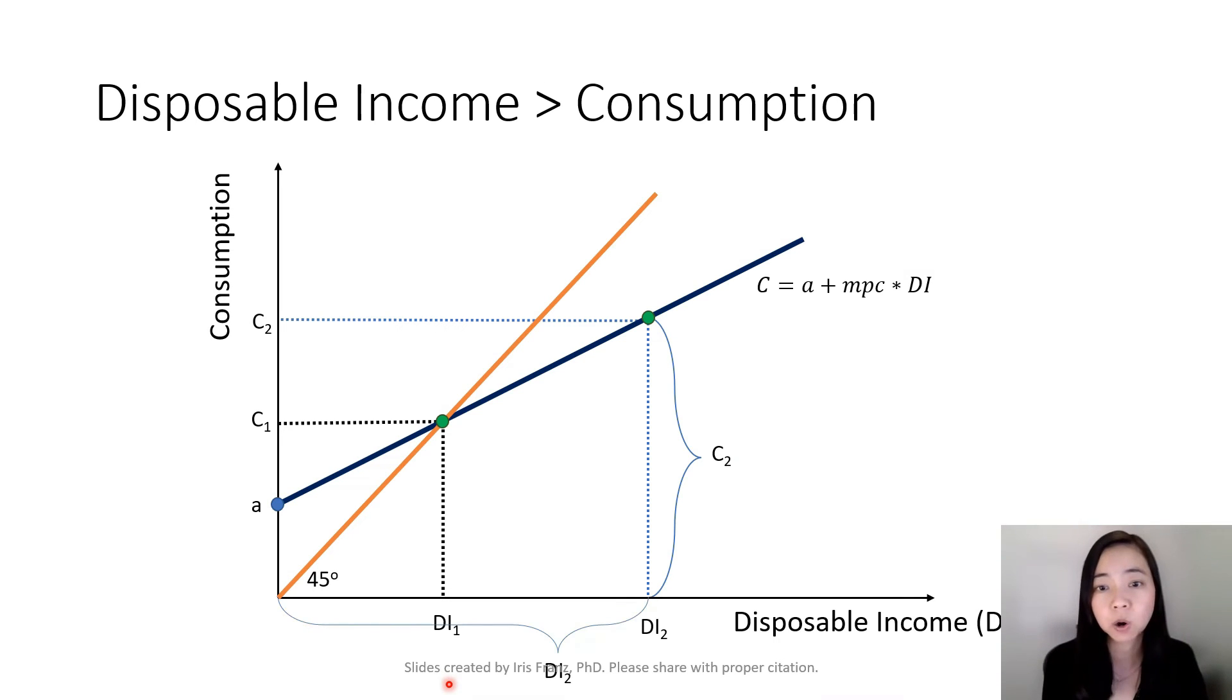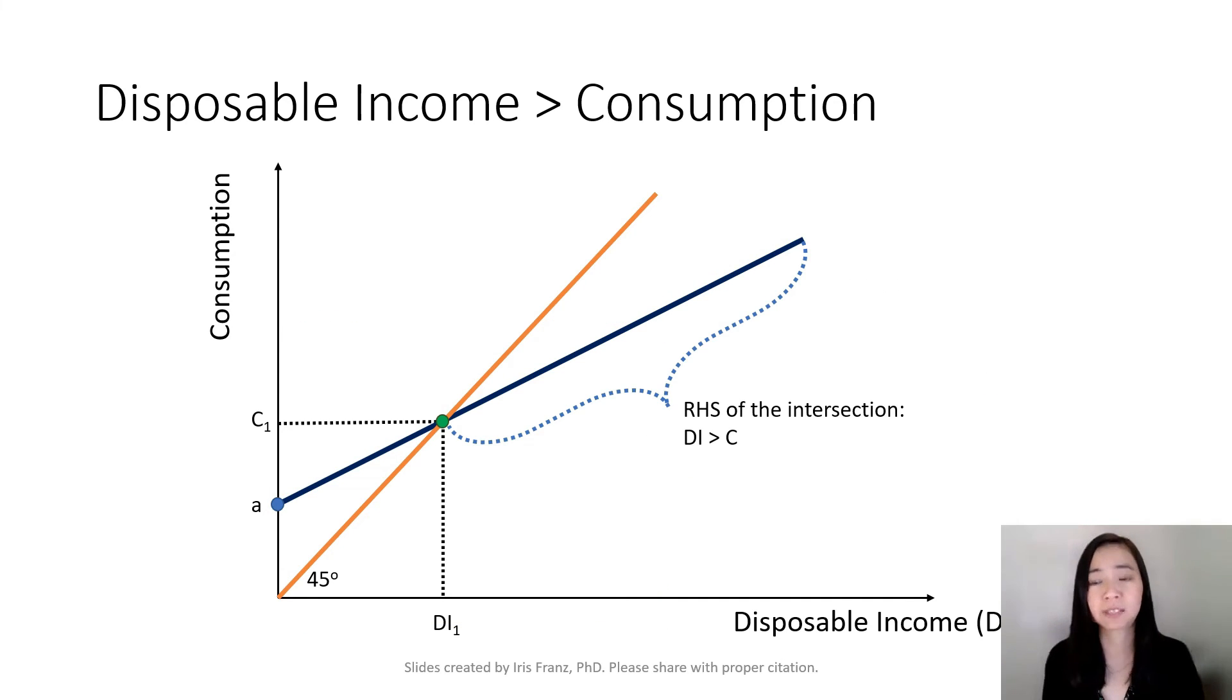In particular, in this case, you can see that our DI2 is greater than C2, meaning our disposable income is higher than our consumption. If you're on this consumption schedule and on the right-hand side of the 45-degree line, that means your disposable income is greater than the consumption.